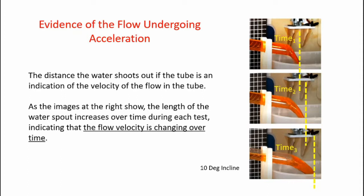If we look at some images of the water exiting the tube, we can see evidence that the water is actually accelerating over time. The top picture at time one shows the water shooting out a certain distance. The second picture time two shows it shooting out a little bit further. At time three, you see the water shooting out pretty far relative to time one. This is evidence that the water is flowing faster and thus moving out further as it leaves the tube.